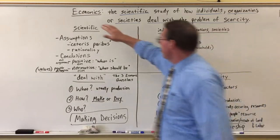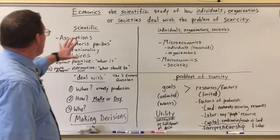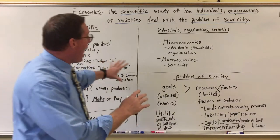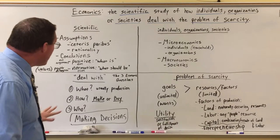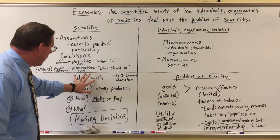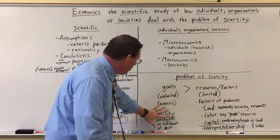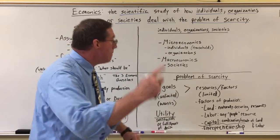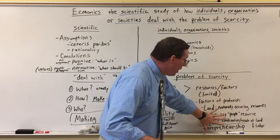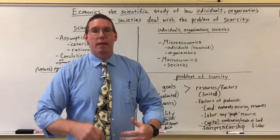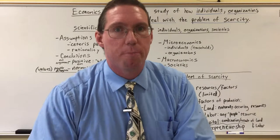What we do in this world to deal with the problem of scarcity is collect land, labor, and capital, put them together, and use them to satisfy our utility. That is what the study of economics is all about. We scientifically study how individuals, organizations, and societies figure out how to answer these questions and satisfy their utility to achieve their goals by manipulating their land, labor, and capital in different ways so that they get the best outcome possible.